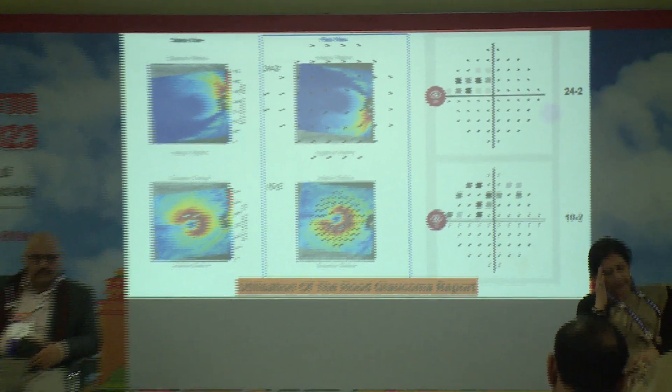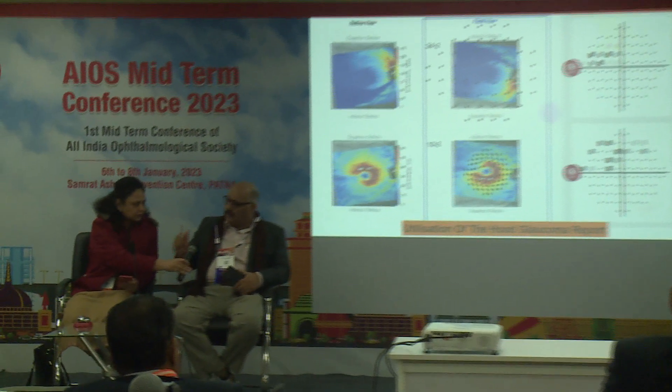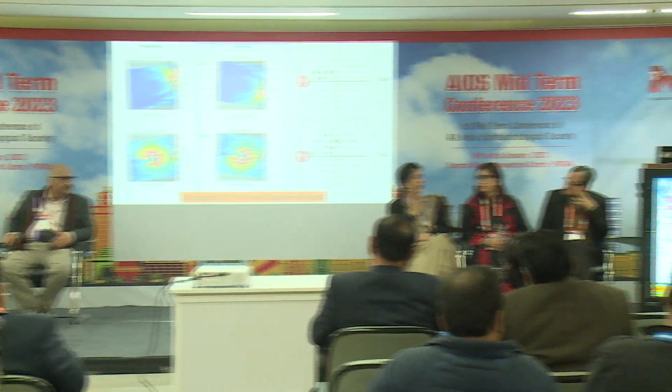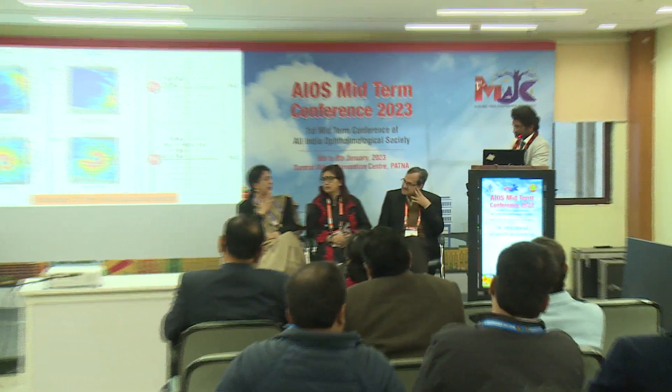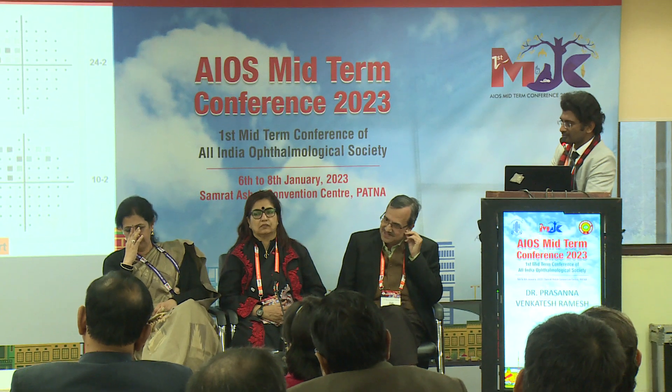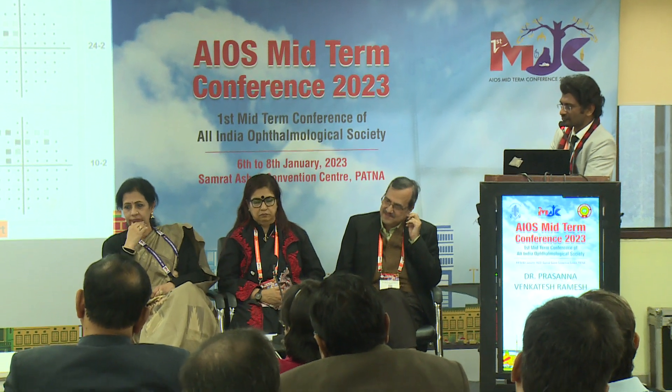Q&A: If you see a 10-2 defect, the IOP is on the higher side, and the disc shows changes, what do you do? We will always repeat the 10-2 — one single visual field is never enough. We will always repeat it before making a management decision.